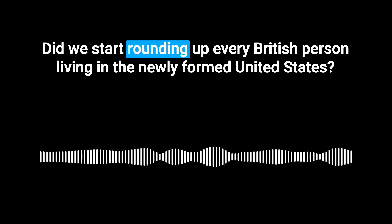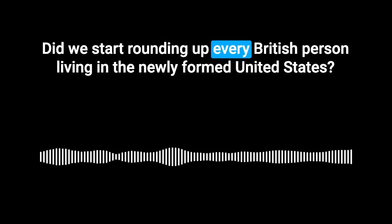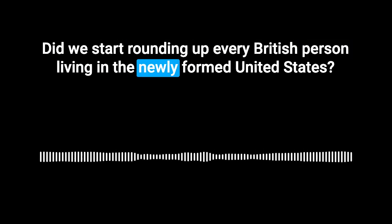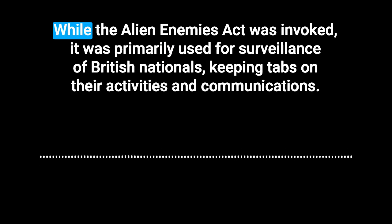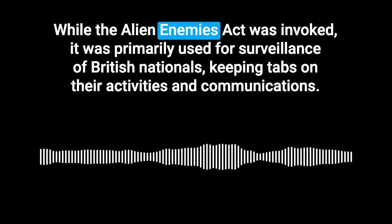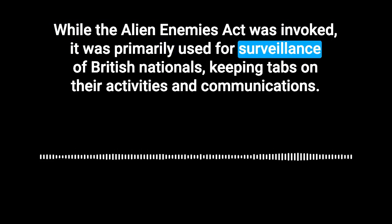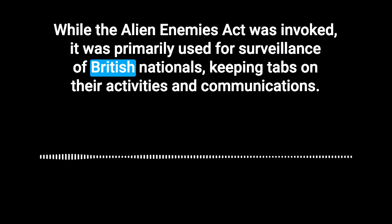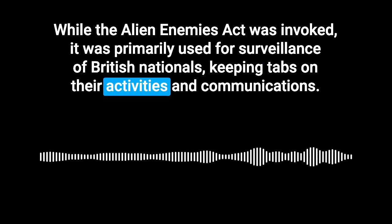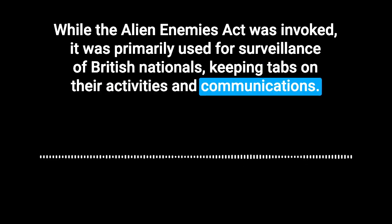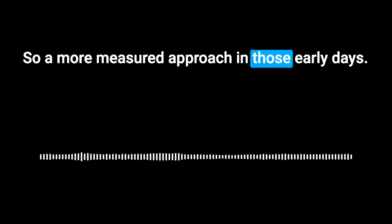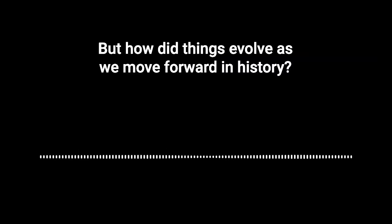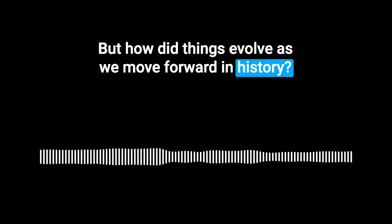That was against Great Britain. Did we start rounding up every British person living in the newly formed United States? Not quite. While the Alien Enemies Act was invoked, it was primarily used for surveillance of British nationals — keeping tabs on their activities and communications. Think of it as a watchful eye, not necessarily an iron fist. A more measured approach in those early days.